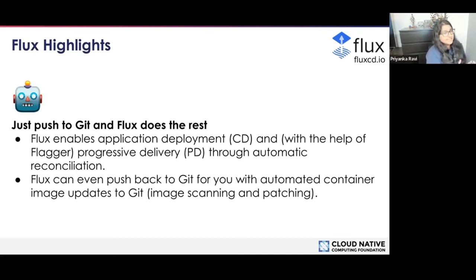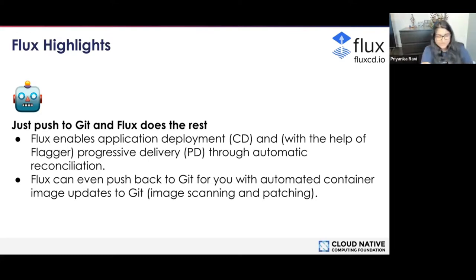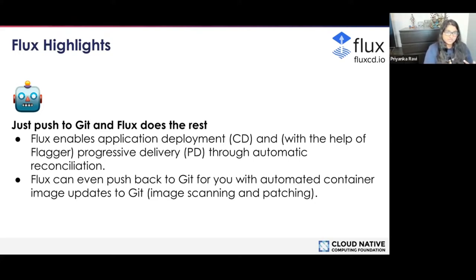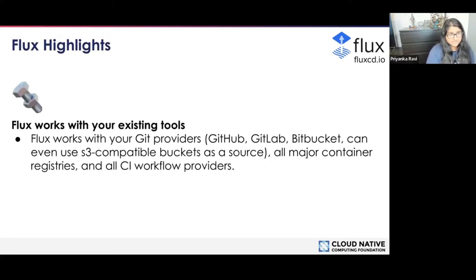The next thing is just push to Git and Flux does the rest — it really is that simple. Flux enables application deployment and, with the help of Flagger, also progressive delivery through automatic reconciliation. It continuously looks for those changes and applies them automatically. Flux can even push back to Git for you with automated container image updates — it can do image scanning and patching. The image reflector controller and the image automation controller work together to update a Git repository when new container images are available.